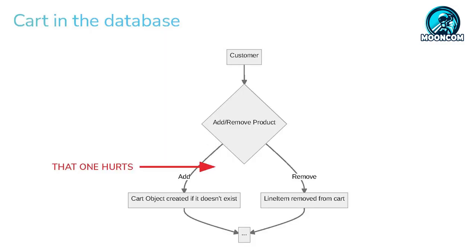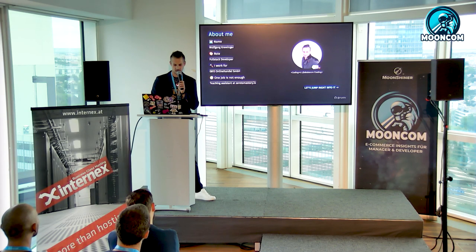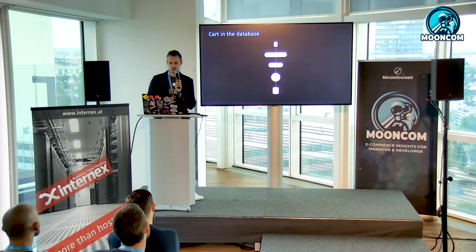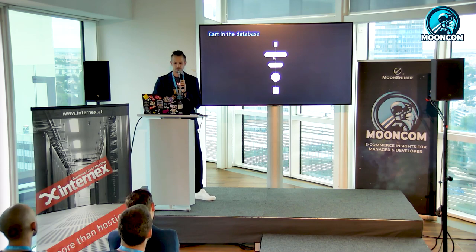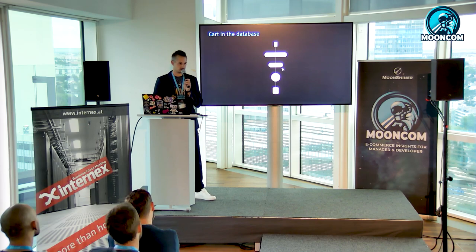Let's jump right into it. This is just a schema of how a customer journey might start with the cart. It starts with the customer — the customer adds or removes the product from or to the cart. If the customer adds the product, the cart object gets created; otherwise the product will just get removed. As soon as the customer puts the product into the cart, all processors get applied. Shopware does the job to calculate everything needed for the final cart, and then the cart persister stores it.